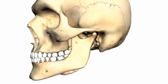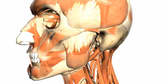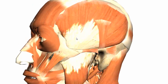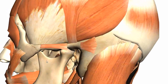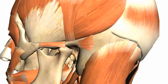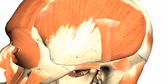The anterior coronoid process is important because it's the site where the temporalis muscle inserts. This large muscle here is the temporalis — I will be doing a tutorial on facial muscles — but just to point out that this muscle inserts onto the coronoid process of the mandible, and it is a muscle involved in mastication.